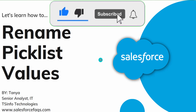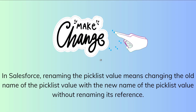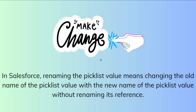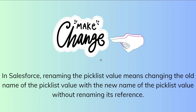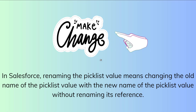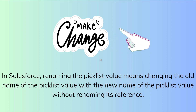Let's proceed and first understand what we mean by renaming a value in a Salesforce picklist. Renaming a picklist value means changing the old value with a new name without affecting its reference. Basically, when we rename a picklist value, we are modifying the label — the name that appears in the user interface — and it has no impact on the data stored in Salesforce or any associated functionality. Renaming can improve clarity, fix mistakes, improve user experience, and unify labels according to organizational standards.